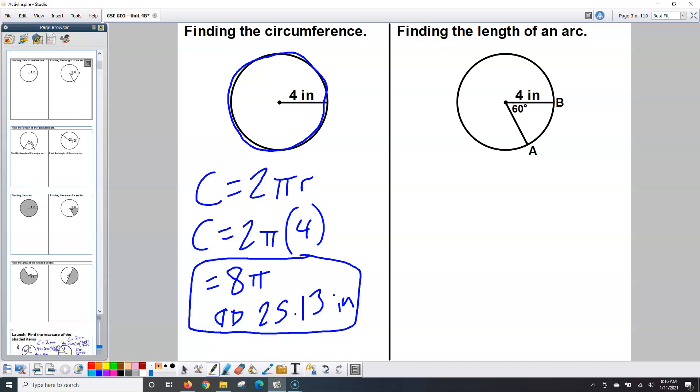Finding the length of an arc is a little bit different. Previously we've talked that an arc is a fraction of the circumference. When it says find the length of the arc, we're talking about arc AB here. If we want to find the length of that arc, it's a fraction of the whole entire circumference. So if I have the circumference is 2πr, which is 2π times 4, and I only want a fraction of that, I need to know what fraction.